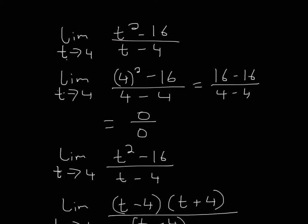So I plugged in 4 here, so I get 4 squared, 16 minus 16, and I plugged in 4 here, so 4 minus 4 is 0. So you get 0 over 0, but that doesn't really tell us anything about the limit, so we have to try something different.